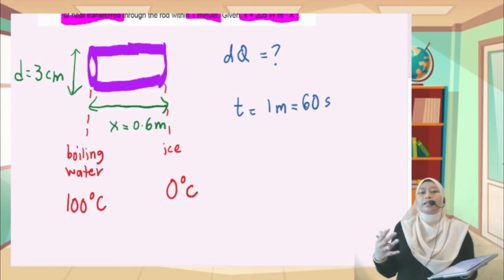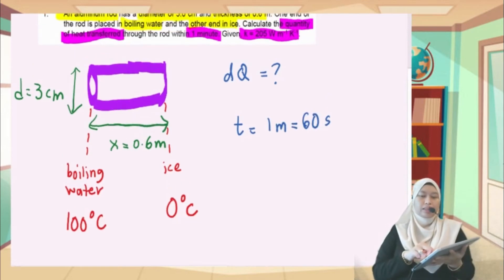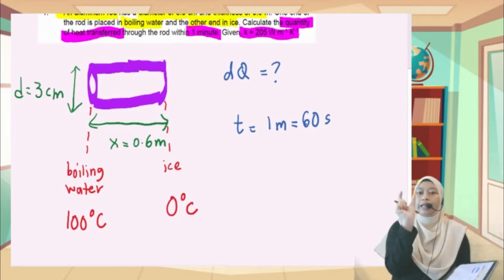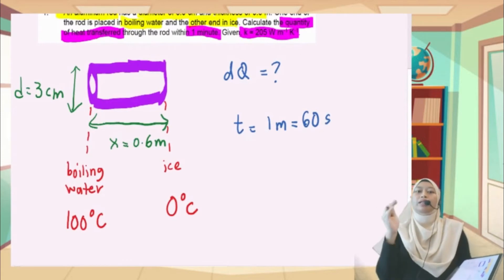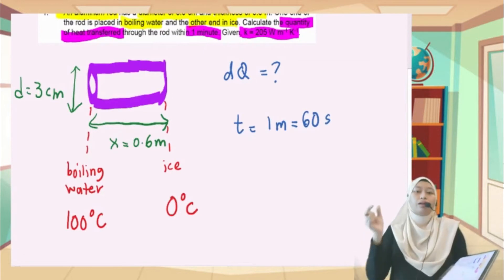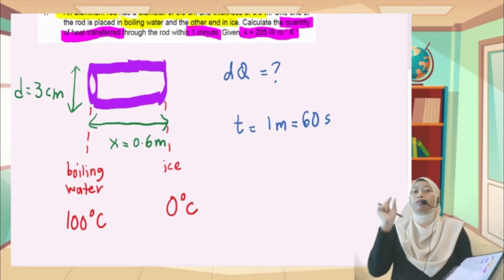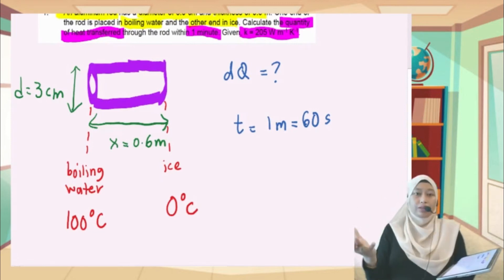Why do I say the question asks for DQ? Because it states quantity of heat transfer only. If the question asks for the rate of heat transfer, then we need to find DQ over DT. But the question asks for heat transfer with no word of rate there, so just find DQ.